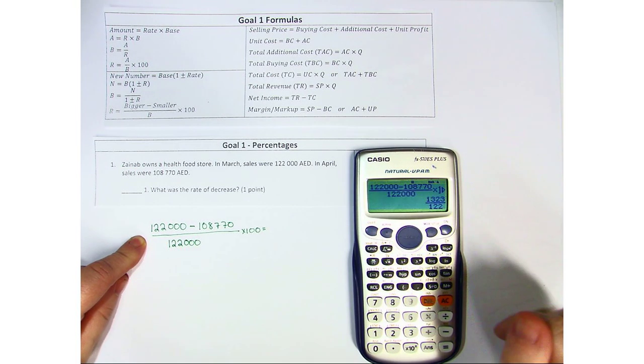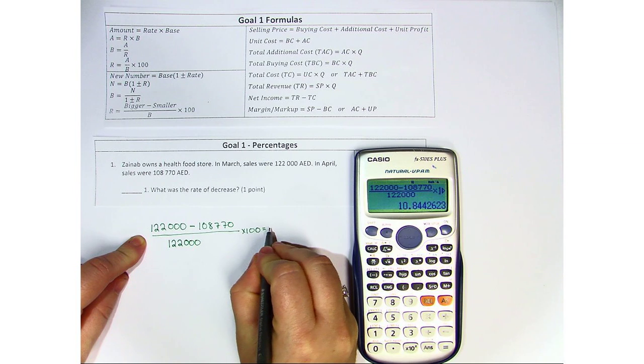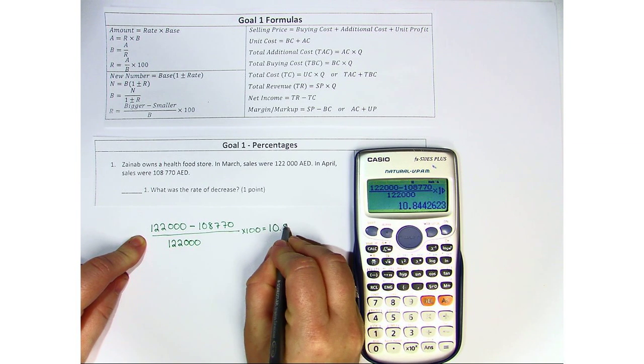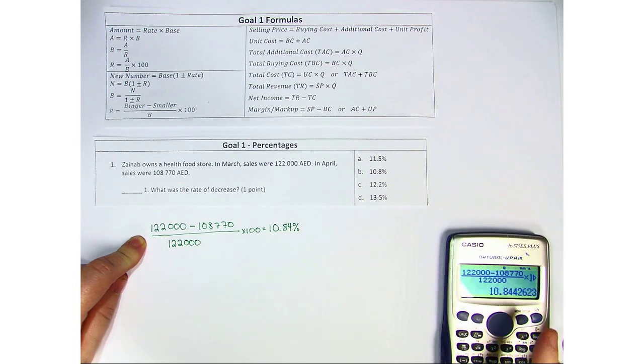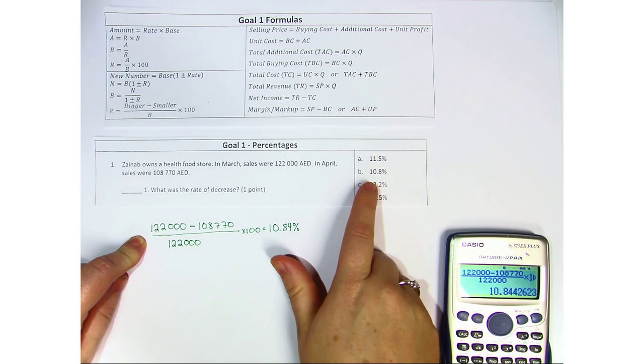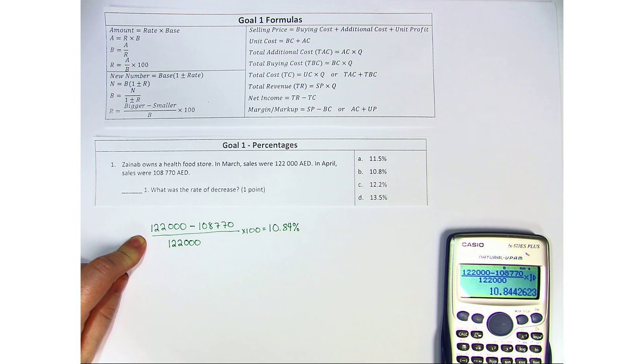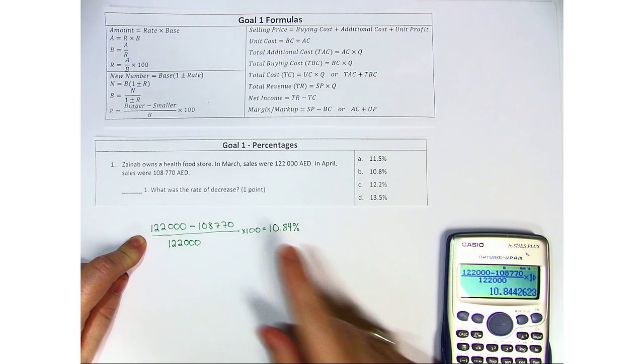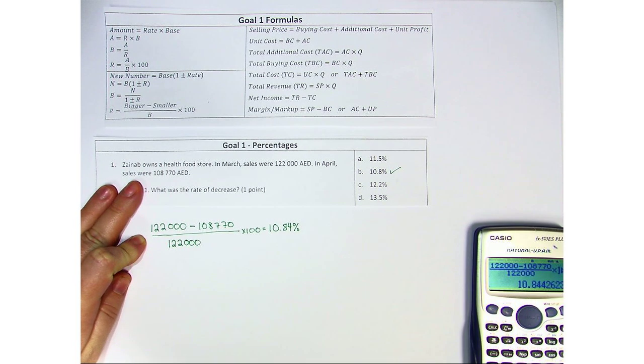And we get a fraction here. So we're going to go ahead and hit SD, and we should get 10.84%. So if we look at the choices, we see 11.5, 10.8, 12.2, and 13.5. In our case, 10.84 was what we found. So this is going to be the correct choice.